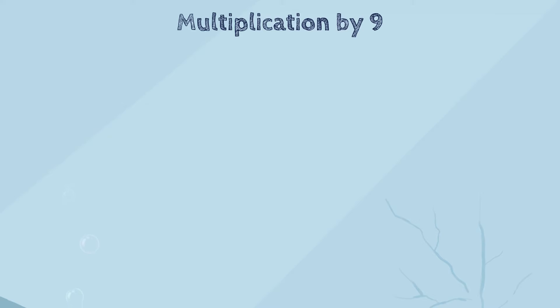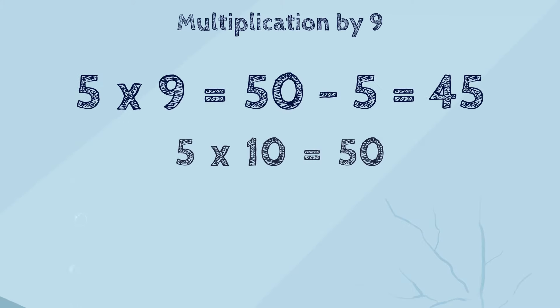Let's try several more examples. What is 5 multiplied by 9? 5 times 9 is 5 times 10 minus 5. 5 times 10 is 50. 50 minus 5 is 45. So, 5 multiplied by 9 is 45.